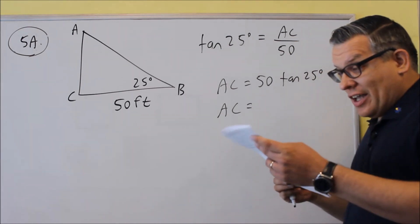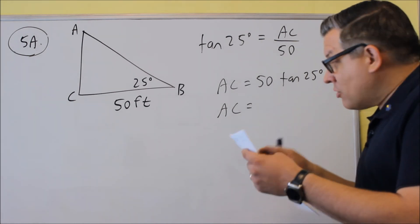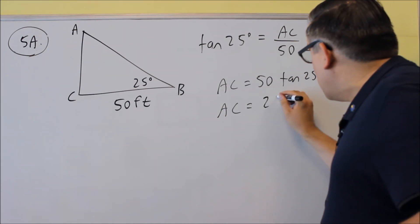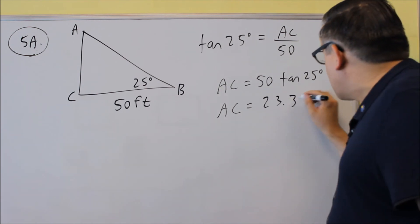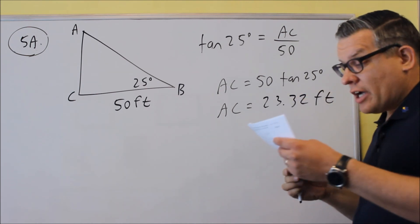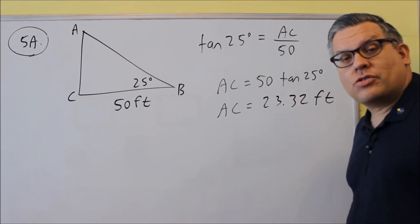It doesn't say what to round to, so I'm going to round it to two decimal places. On the test it'll be more specific and tell you what to round to. But in this case, if you put that into your calculator, you're going to get 23.32 feet.